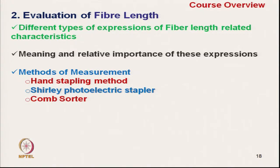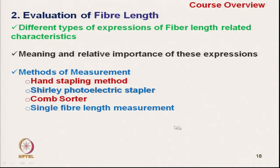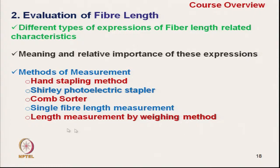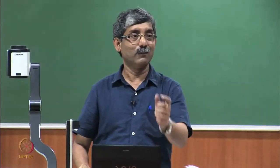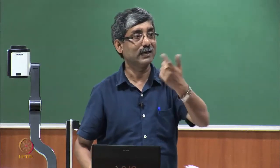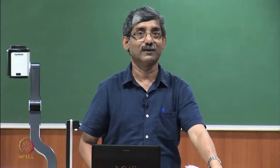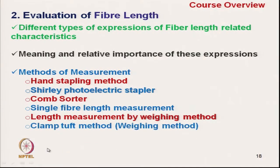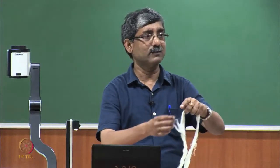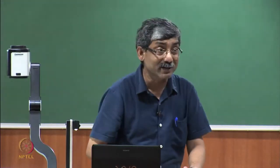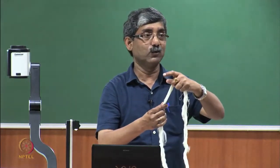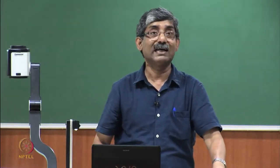Then the comb sorter method, where we test the effective length. Then single fibre length measurement — we will discuss how to measure the individual fibre length. Then length measurement by weighing method, where we take the mass and based on mass and class size calculate the fibre length. Another weighing method is the clamped tuft method, used mainly for sliver and fibres that are almost parallel in nature.